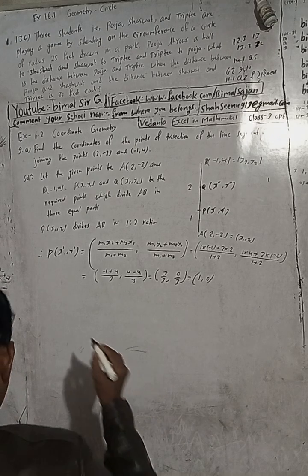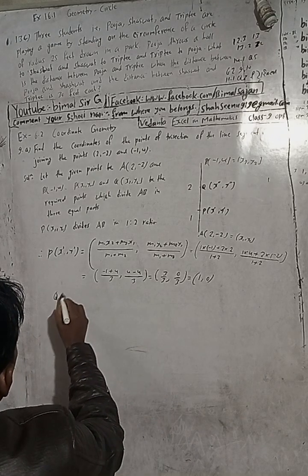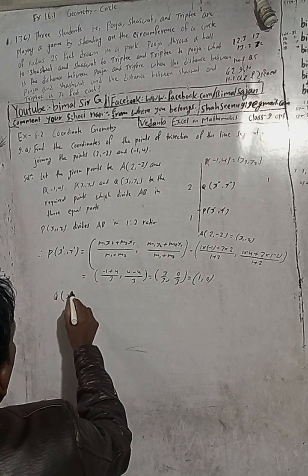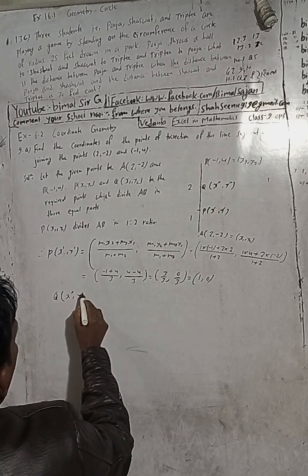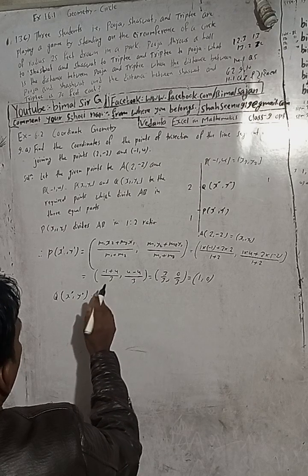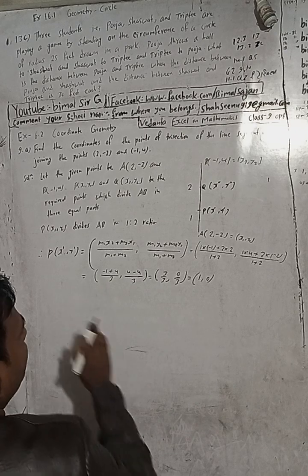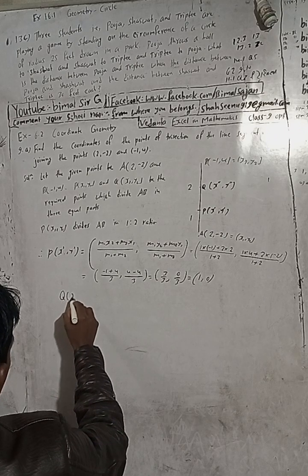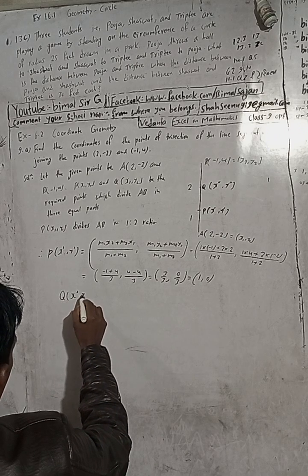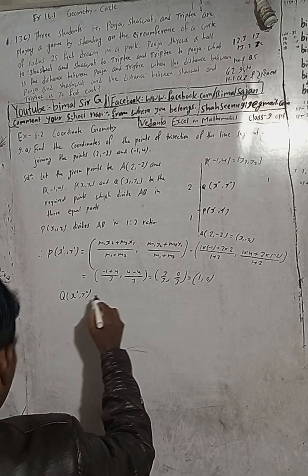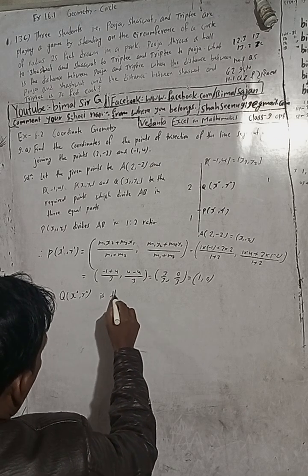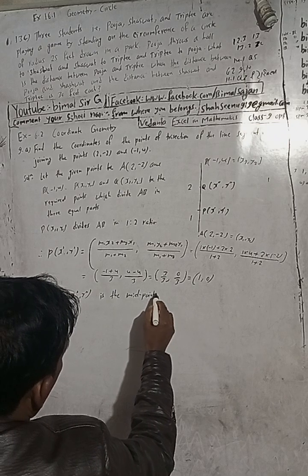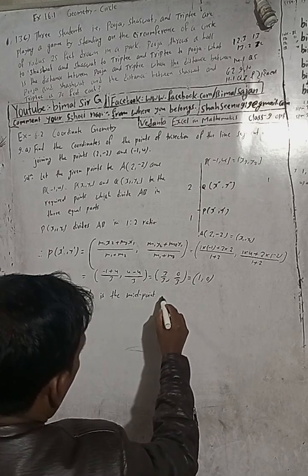Now let me find Q. Q(x double dash, y double dash) is the midpoint of PB, where P is the point we just found, P(1, 0).